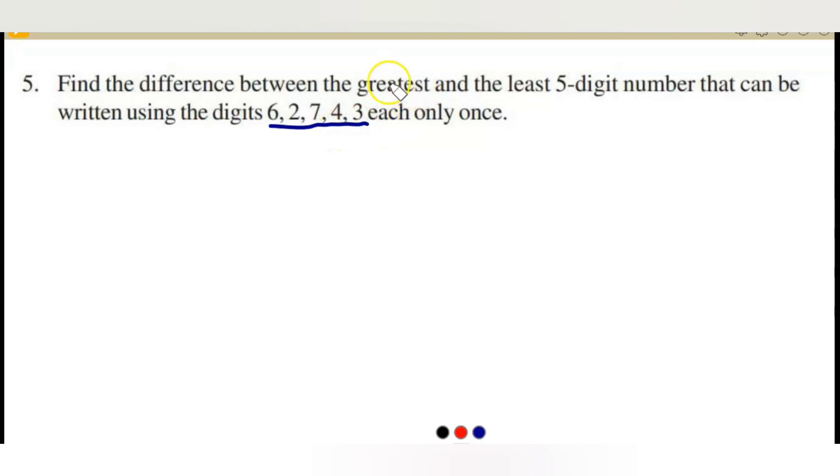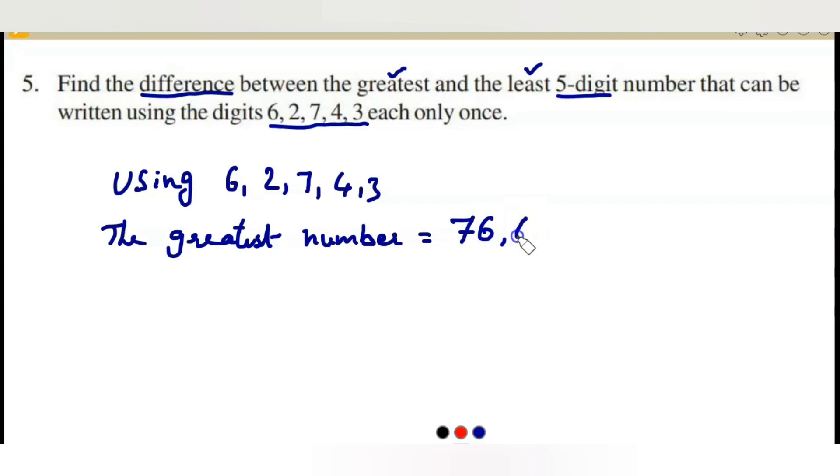You have to use these digits only one time and first find the greatest number and the least number of five digit numbers each, then find the difference between those two numbers. First let us write what is the greatest number using these digits 6, 2, 7, 4, 3. The greatest number starts with the greater digit 7.